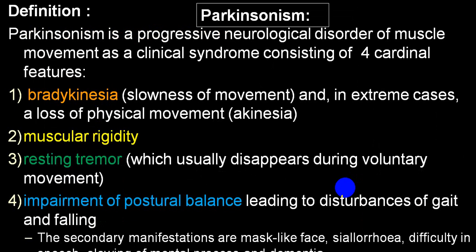Parkinsonism is a progressive neurological disorder of muscle movement as a clinical syndrome, and it consists of four cardinal features: bradykinesia, muscular rigidity, resting tremors, and impairment of postural balance. Secondary to this, a person will have a mask-like face, sialorrhea, difficulty in speech, mental processes will be retarded, and the person can even have dementia. Any person who has any one of these four cardinal symptoms is put into the group called Parkinsonism.